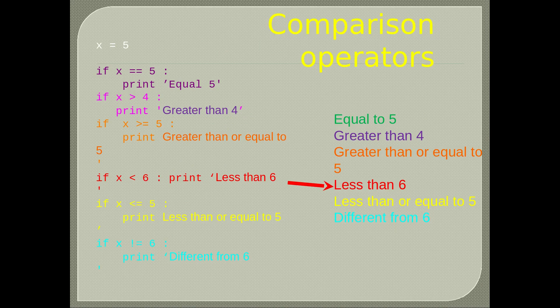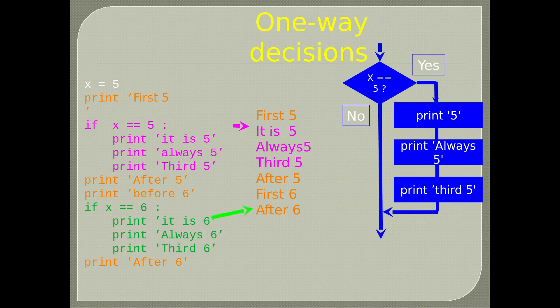One-way decisions: here is the line of thought. If x equals 5 or 6, we also wrote print for each statement to observe the line of thought. We tested if x equals 5, printed that it equals 5, then went to the second condition to test x against 6. This method can be useful to debug a program.